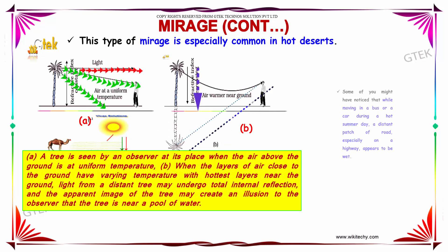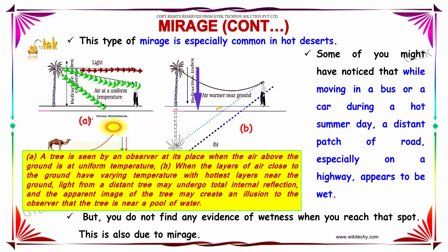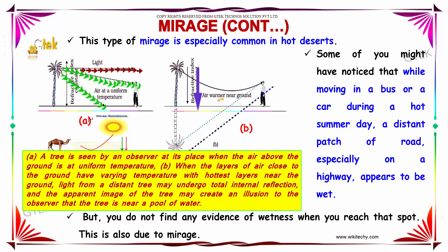This type of mirage is especially common in hot deserts. Some of you might have noticed that while moving in a bus or a car during a hot summer day, a distant patch of road — especially on a highway — appears to be wet. But you don't find any evidence of wetness when you reach that spot. This is also due to mirage.